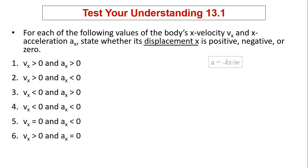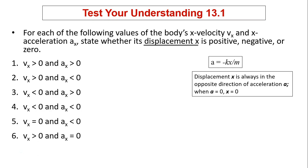Remember, how is a related to x? a equals negative kx over m. So a is always opposite in direction to x. When a equals zero, x equals zero.